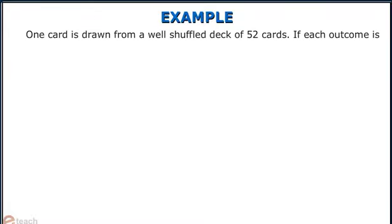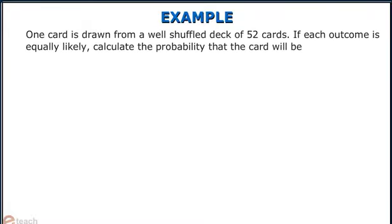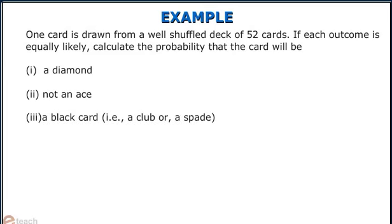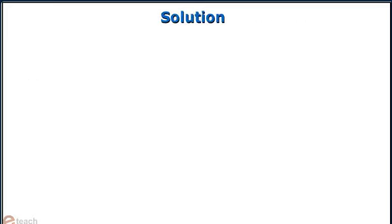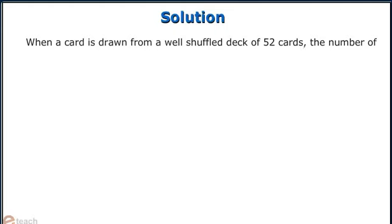One card is drawn from a well-shuffled deck of 52 cards. If each outcome is equally likely, calculate the probability that the card will be: 1) a diamond, 2) not an ace, 3) a black card, 4) not a diamond, 5) not a black card. When a card is drawn from a well-shuffled deck of 52 cards, the number of possible outcomes is 52.